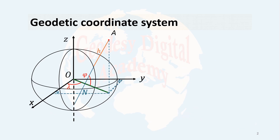Now I explain how geodetic coordinates are converted to Cartesian coordinates. It's very similar to what we did for spherical coordinates and three-dimensional coordinates. But the difference is that the normal to the ellipsoid does not go through the center of the ellipsoid. To handle this, I shift the XOY plane downward to the point where the normal to the ellipsoid meets the z-axis of the ellipsoid.